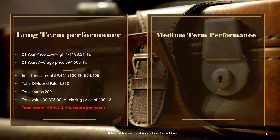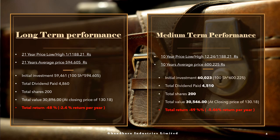Now looking at the medium-term performance of the company over 10 years: the lowest share price was 12.24 rupees and the highest share price was 1,188.21 rupees. The average share price was 600.225 rupees. With an initial investment of 100 shares, the cost would be 60,023 rupees. Total dividends paid by the company to shareholders were 4,510 rupees.